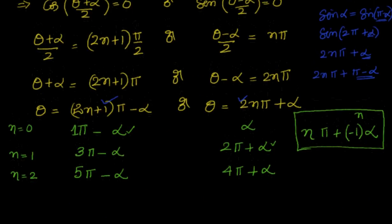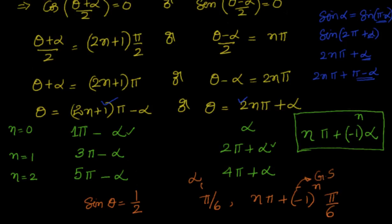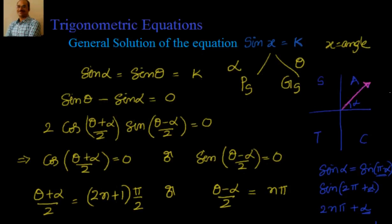Example: sin θ = 1/2. The principal solution must be between −π/2 and π/2. Since sin(30°) = 1/2, the principal solution is α = π/6. The general solution is θ = n·π + (−1)^n · π/6. We will do more examples after covering cosine and tangent. That's the general solution of sin x = k — hope you liked it. See you in the next video.